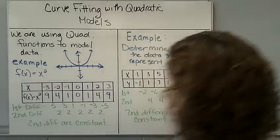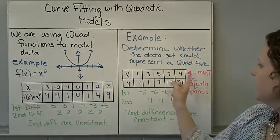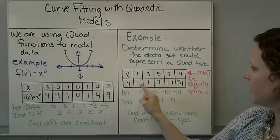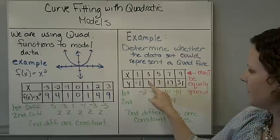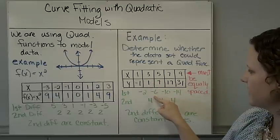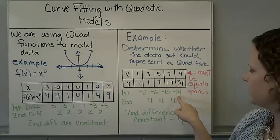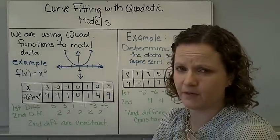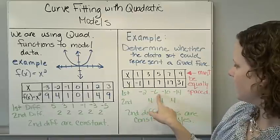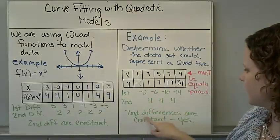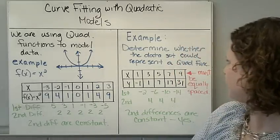Let's try a real one. Determine whether the data set could represent a quadratic function. The x's must be equally spaced, and we're going to look for the first differences and the second differences. The first differences are: negative 2, negative 6, negative 10, negative 14 — those aren't constant, and we don't care. We want the second differences: negative 2 minus negative 6 is 4, 4, and 4. The second differences are constant, so yes, it is a quadratic function.